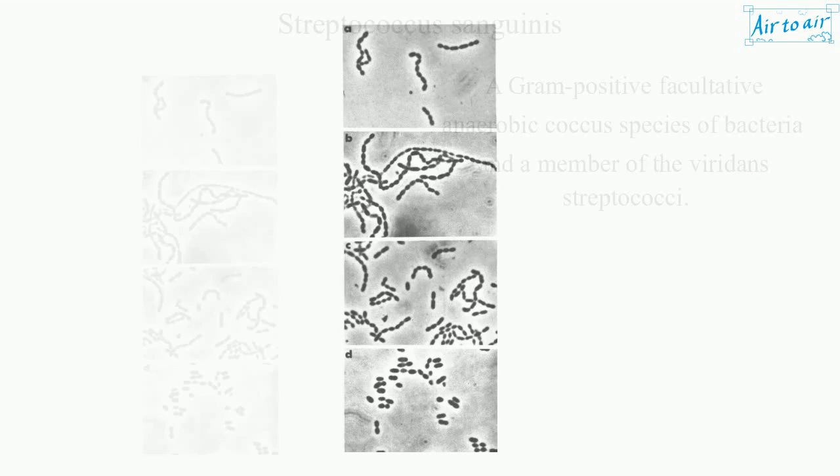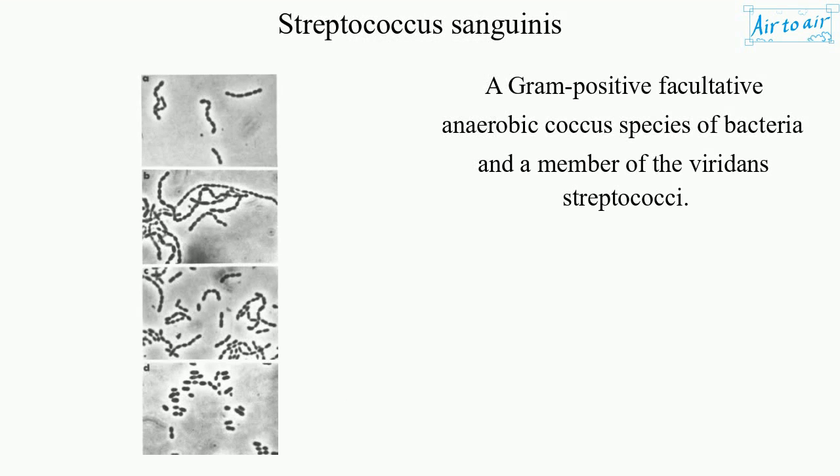Streptococcus sanguinis is a gram-positive facultative anaerobic coccus species of bacteria and a member of the viridans streptococci.